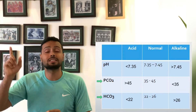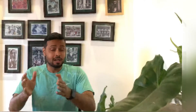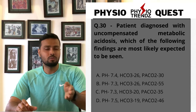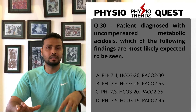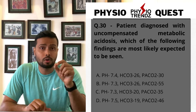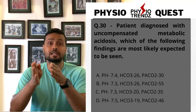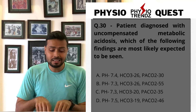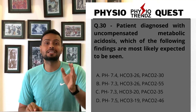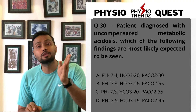The normal values for HCO3 are 22 to 26. Anything below 22 is considered acidosis. Now going back to the question — the diagnosis is uncompensated metabolic acidosis. Since anything wrong with HCO3 indicates a metabolic condition, an HCO3 value less than 22 means metabolic acidosis.